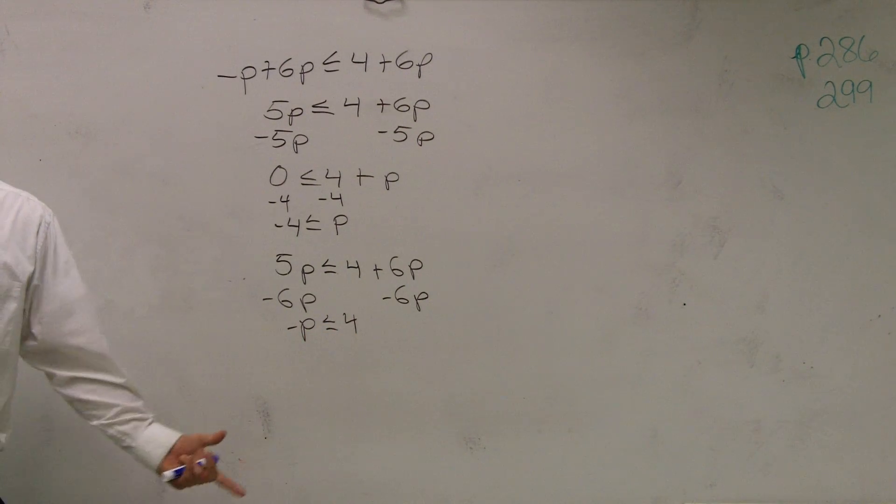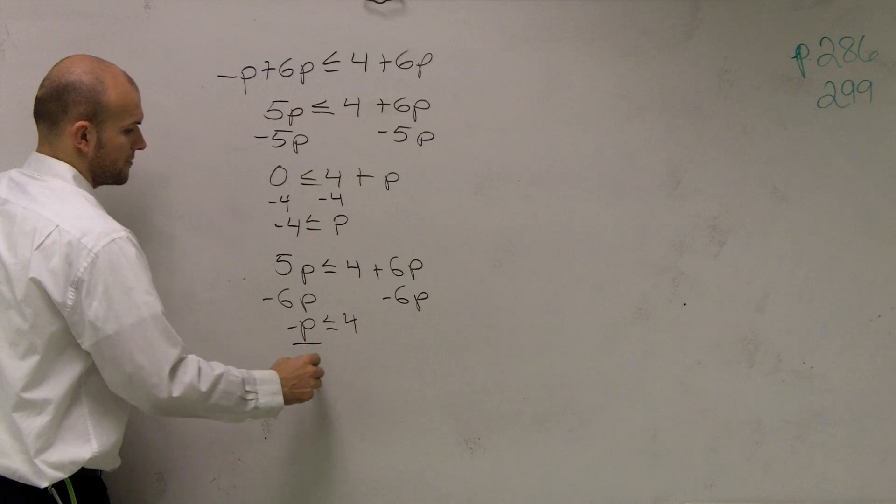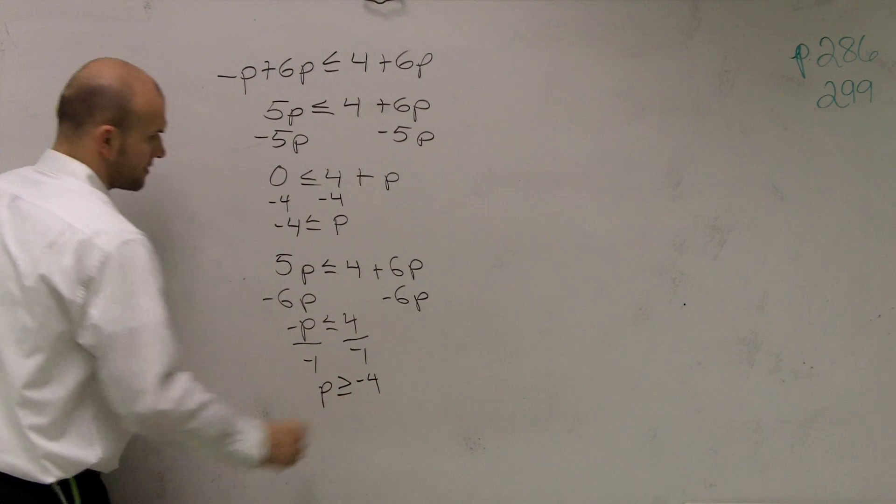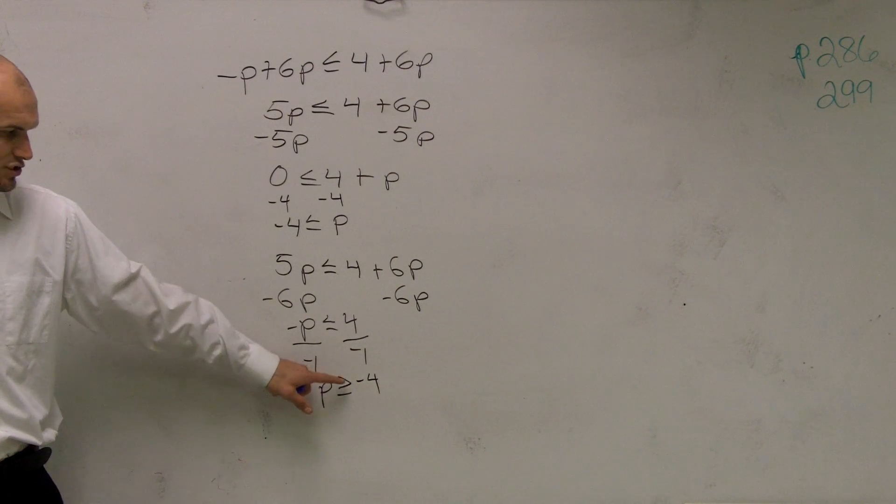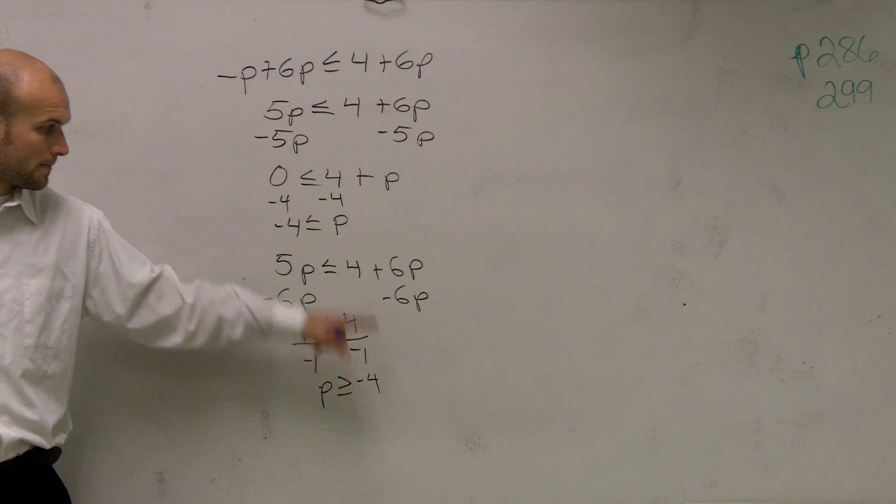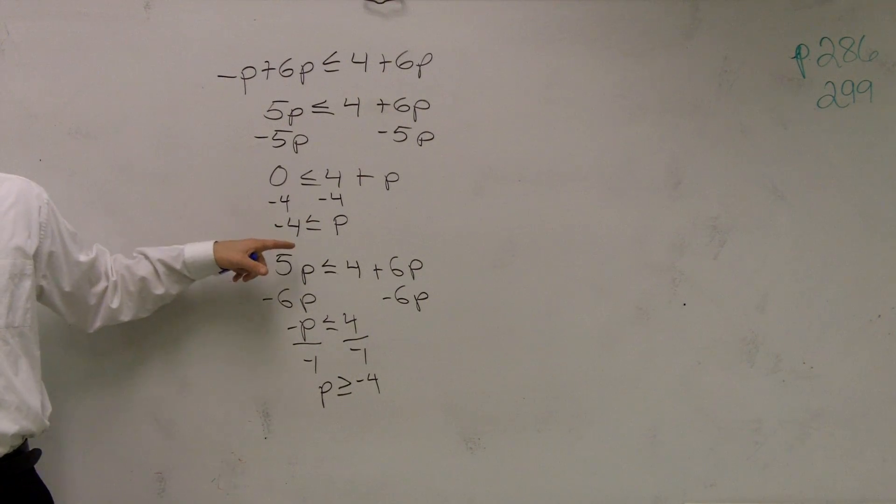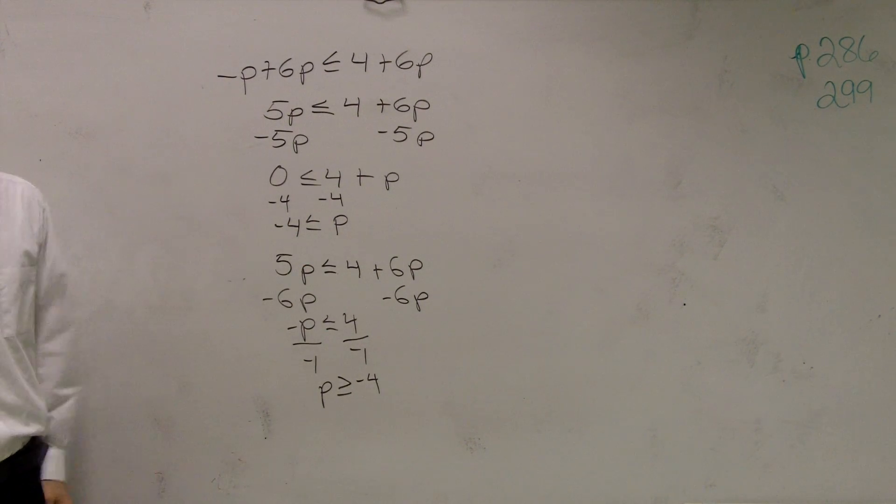Well, 5p minus 6p is a negative p less than or equal to 4. So guess what? I need to divide by negative 1, right? Therefore, I have p greater than or equal to a negative 4. p is greater than or equal to a negative 4. So yes, it's the exact same thing.